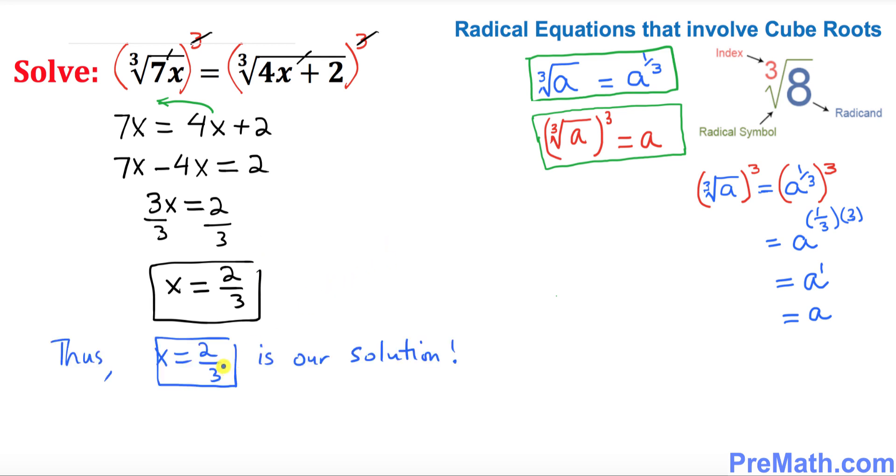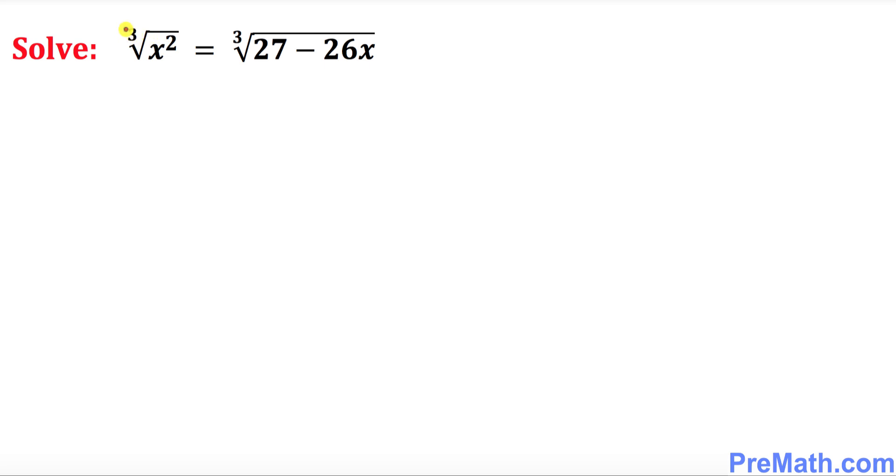Thus x equal to 2 thirds is our solution. Now finally we're going to solve this equation as well. In order to get rid of this cube root we're going to take the power 3 on both sides. Once again this cube and cube root are gone. We simply ended up with x squared equal to, once again this cube and cube root are gone, we got 27 minus 26x.